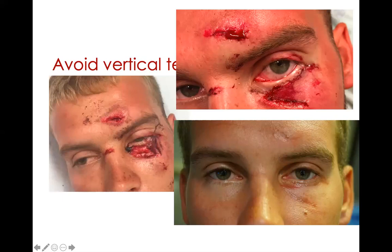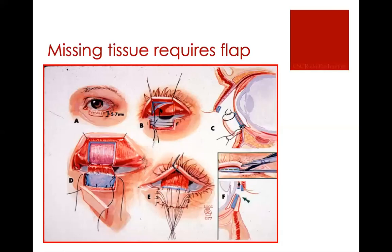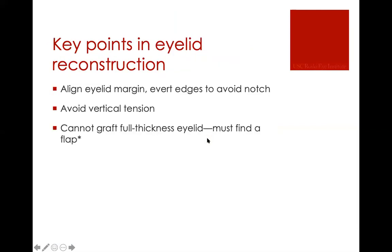If you have missing tissue, you need to use a flap or graft. This demonstrates a Hughes flap, which is how we reconstruct large lower eyelid defects. You can do something analogous for upper eyelids, although it's not as straightforward. Generally you can't graft full thickness because there are two different lamellae. Either your anterior or posterior lamella needs to be a flap, and then you can graft onto that. The Hughes flap is a flap of tarsoconjunctival tissue, and then you can graft skin on top.